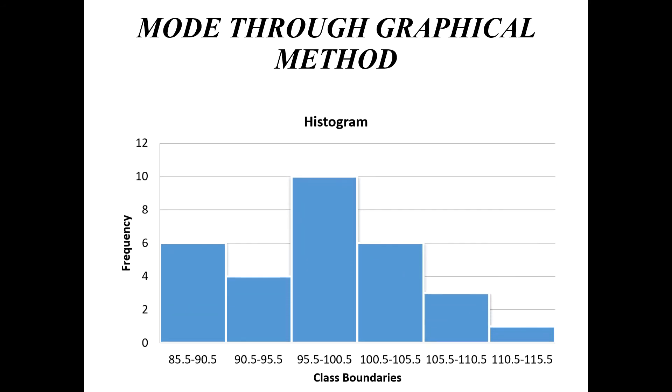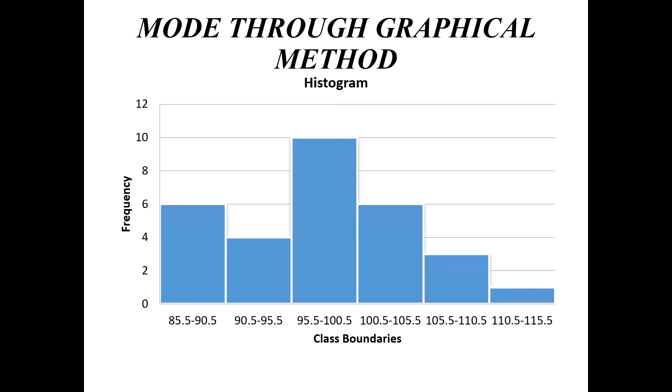Now let's see how to find mode. It is easy. First of all you must know how to construct a histogram. Here the histogram is given for the students height data. Here you have to locate the bar with highest frequency.